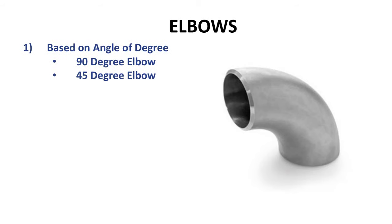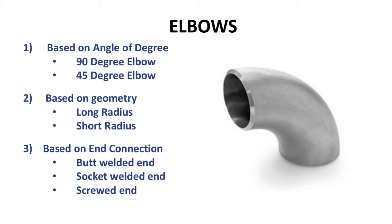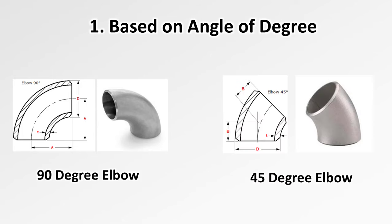Let's go to the first component: elbows. Elbows are classified into many types. The first classification is based on angle of degree, which gives us 90-degree elbows and 45-degree elbows. This is how they actually look — a 90-degree elbow is a 90-degree bend, and a 45-degree elbow has a 45-degree inclination.